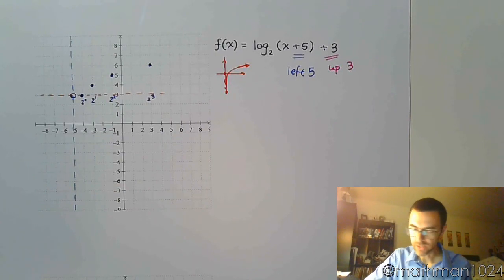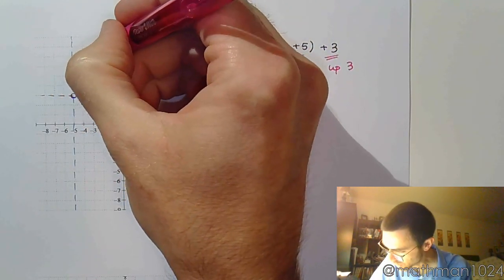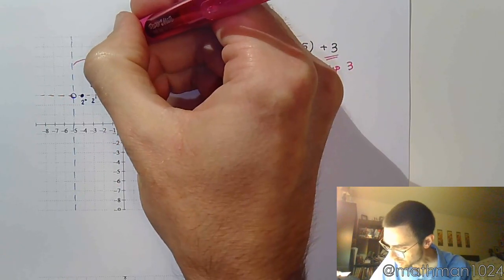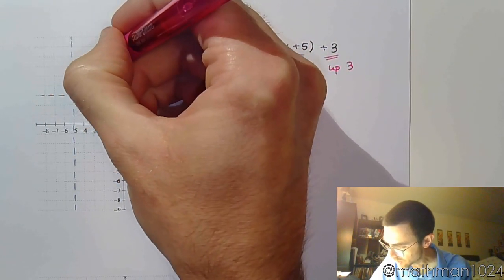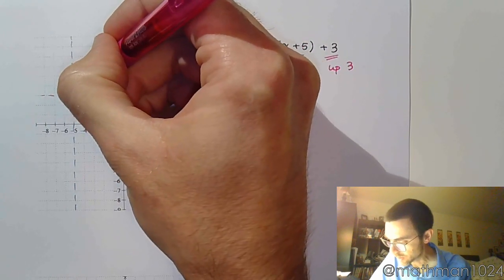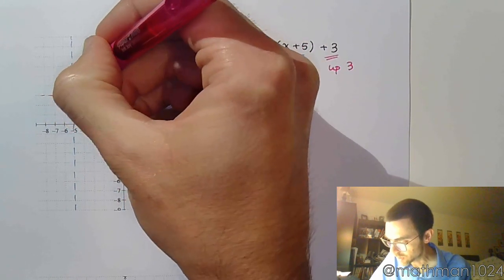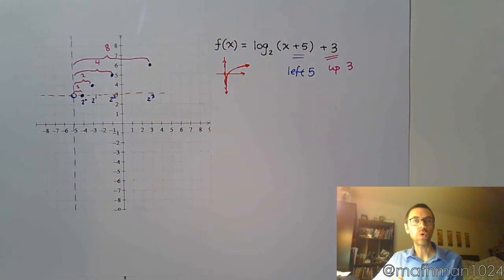But again, you can also kind of see it like this, whatever happens to work for you. So from here to here is 8 units, then 4, 2, and 1.